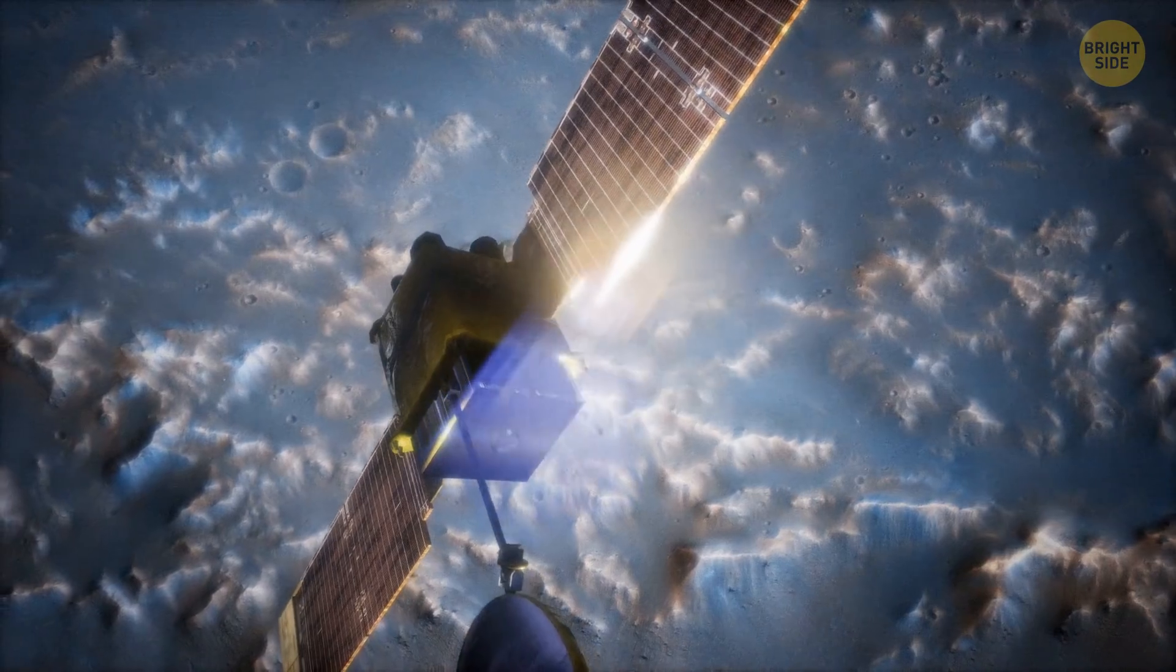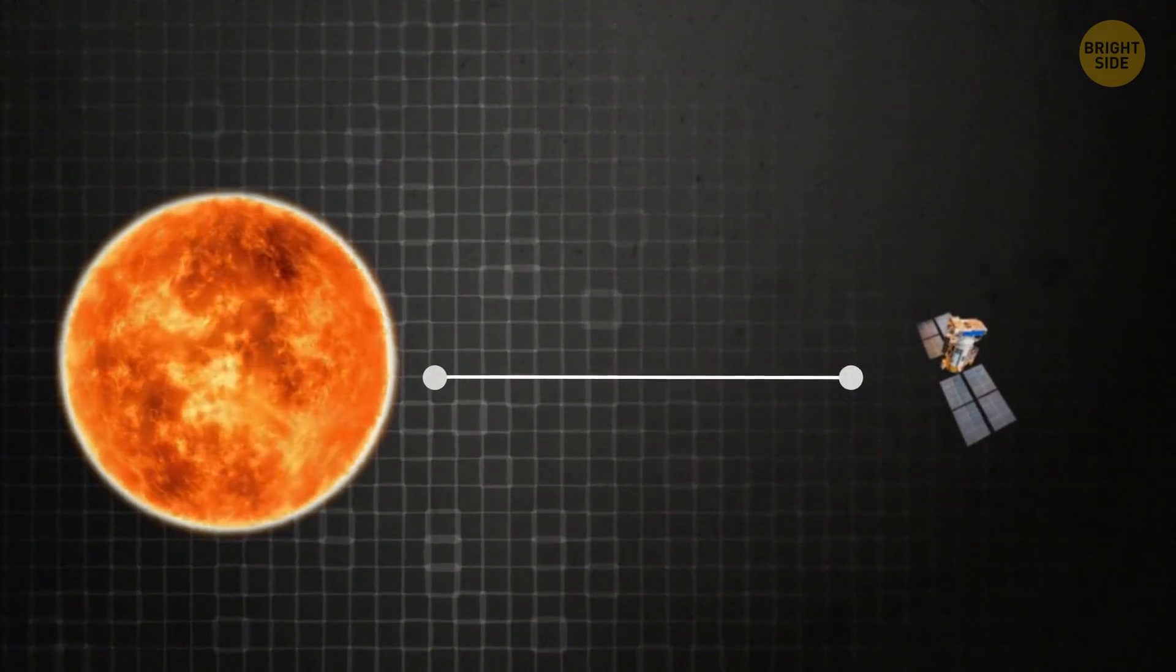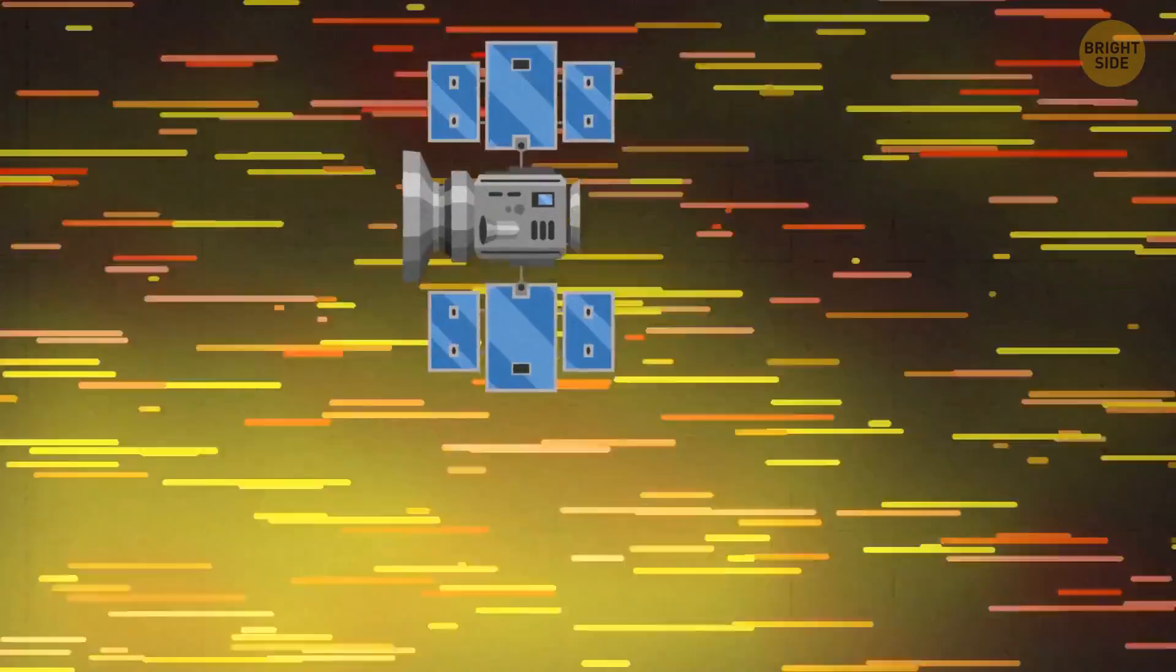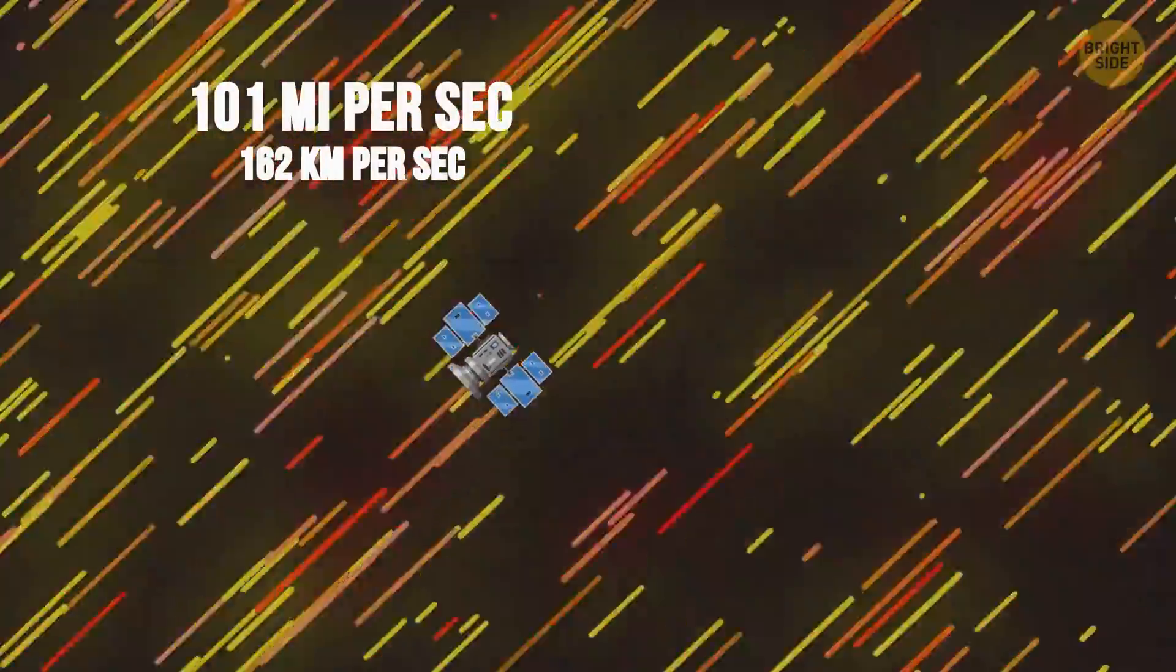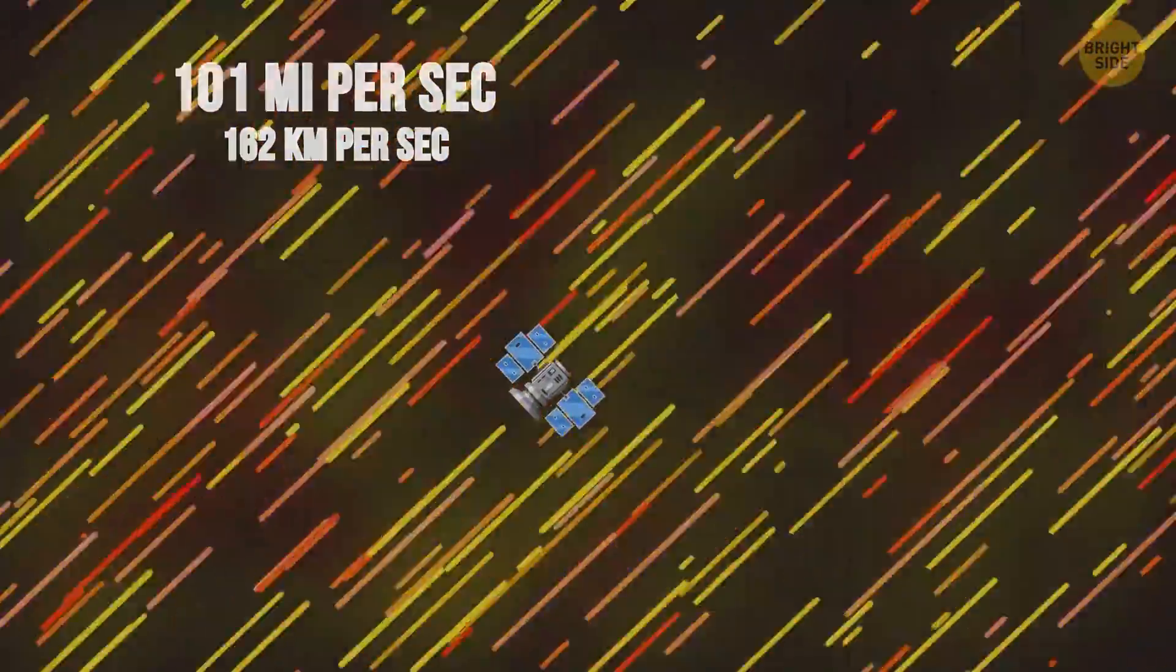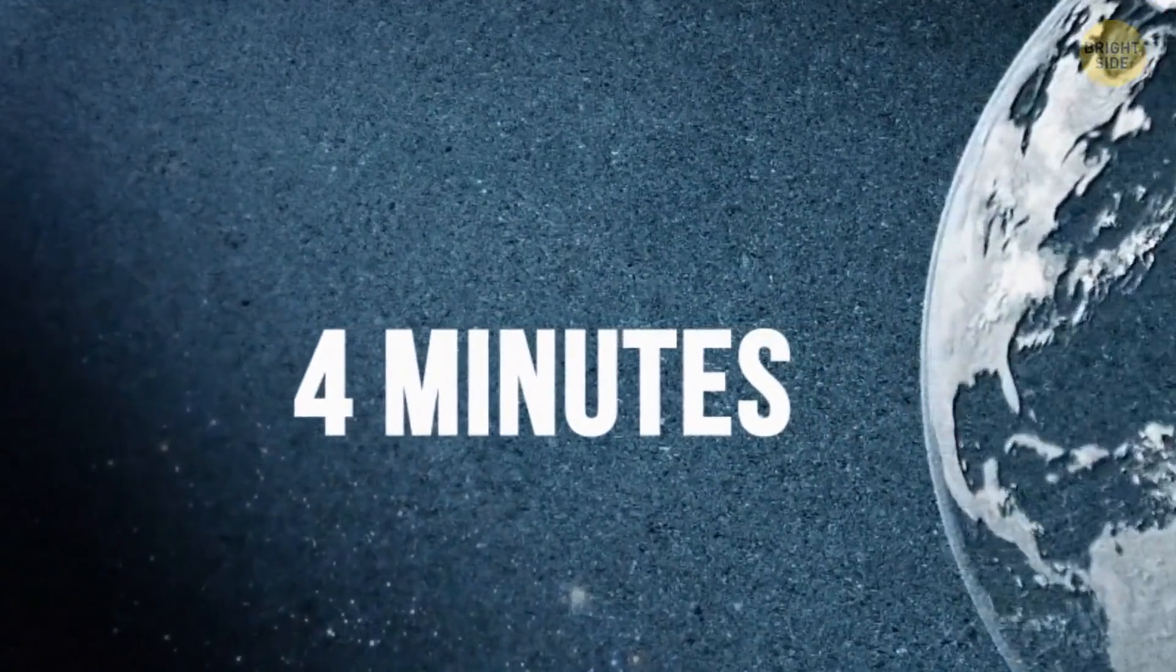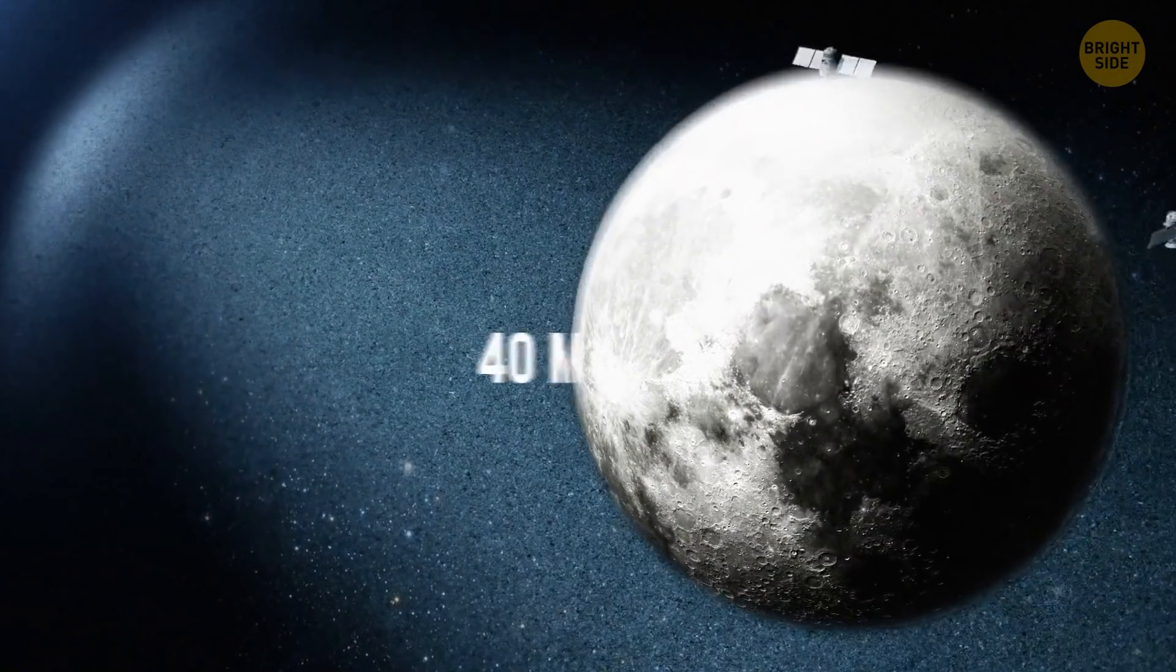While the Parker Solar Probe continues its research, it's already set several world records. It's the closest to the sun human-made object. It's also the speed record holder. During its final approach to the sun, the probe reached a speed of 101 miles per second. That means it could cover the distance from New York to Los Angeles in just 24 seconds, and a trip around Earth would take about four minutes. A journey to the moon in such a spacecraft would only take 40 minutes.